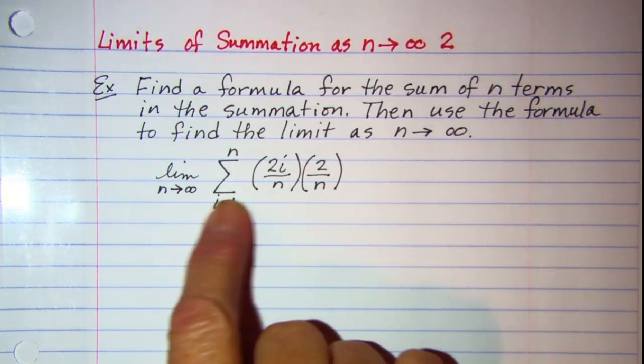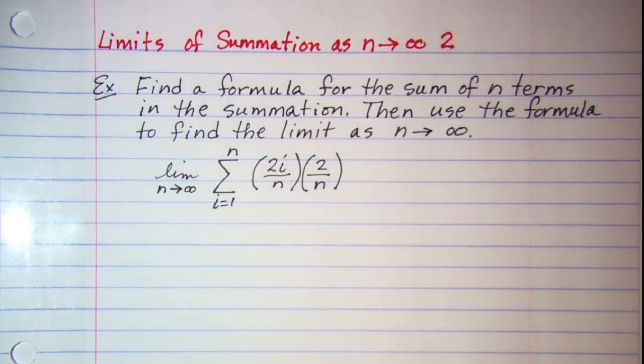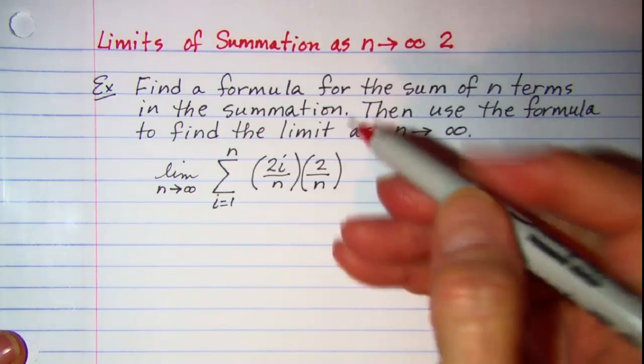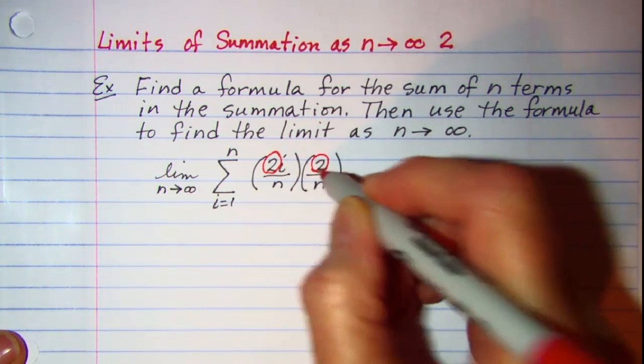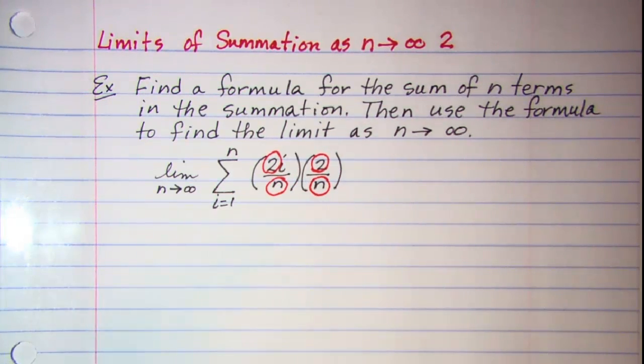Our first step when simplifying a sigma notation is to find all of the factors that do not have i in them. So I have 2 and a 2 and n in both of these factors. So those I can pull out in front of my sigma notation.